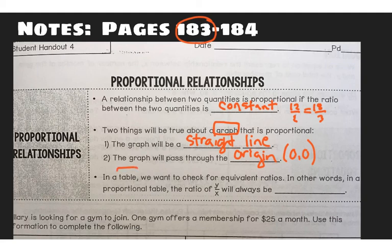When we're looking at a table of values, we want to check for equivalent ratios. In other words, in a proportional table the ratio of y over x will always be constant. And again that constant word just means the same. When you simplify it, it becomes the same number.